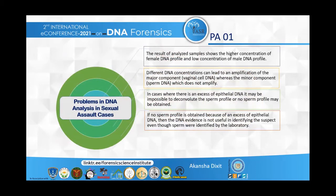The biological evidence that is recovered consists of a mixture of male and female body fluids. The process of differential extraction could yield a sperm fraction more suitable for detecting male STR leads. However, when these samples are analyzed, they result in a higher concentration of female DNA profile and low concentration of male DNA profile. If there is an excess of epithelial cells, it may be impossible to deconvolute the sperm profile, or no male profile may be obtained, making the DNA evidence not useful.